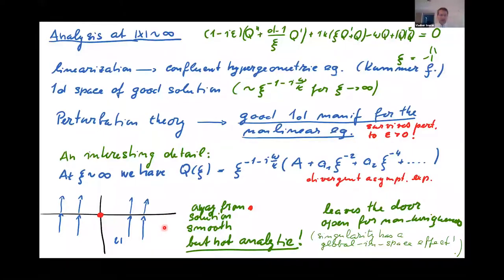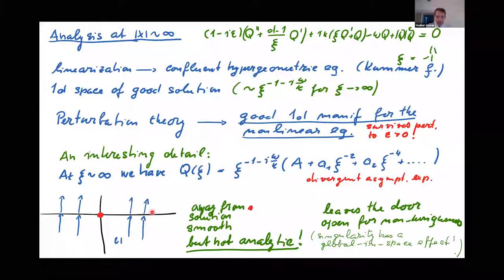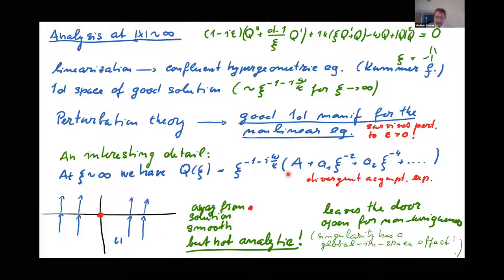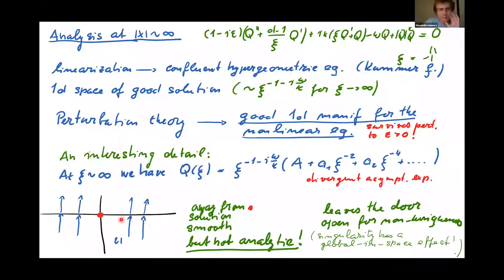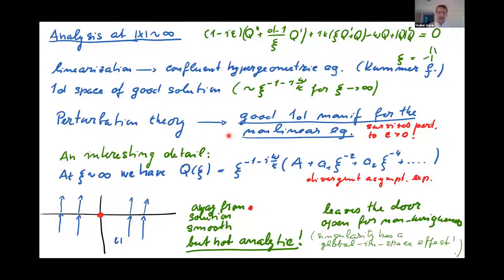This is consistent with non-uniqueness. Any open set where the solution would be analytic in time would rule out non-uniqueness — you could just by continuation have only one way to continue the solution after the singularity. So that's an interesting feature: you expect the solution to lose analyticity in time everywhere in space, even though it will remain C-infinity away from the singularity.